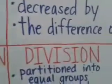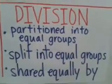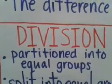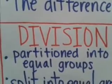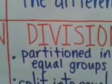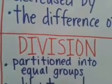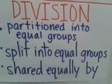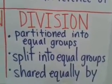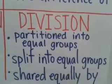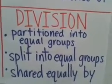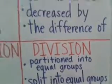Moving on to our last operation — division. Here we have three different key phrases. 'Partitioned' — you see the keyword 'part' — partition means put it in different parts. The keywords for division are: partitioned into equal groups, split into equal groups, shared equally by.